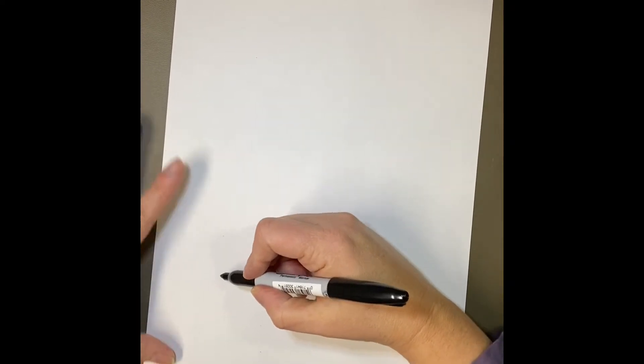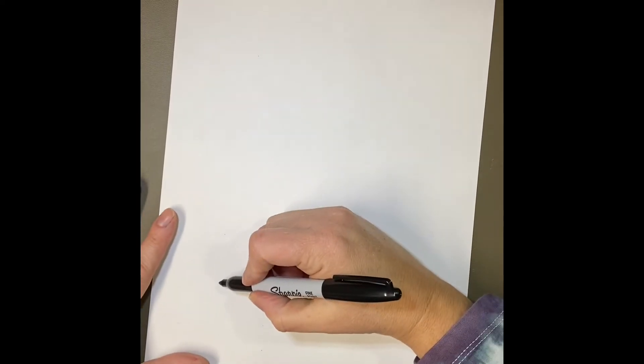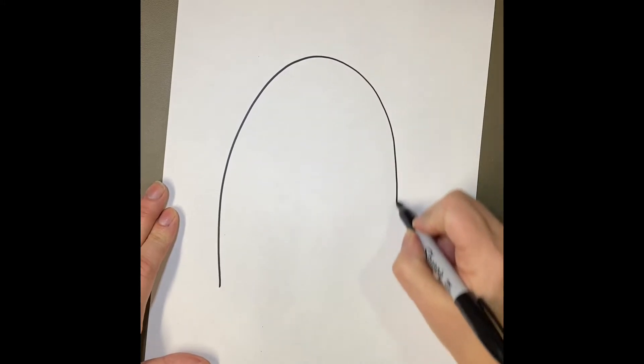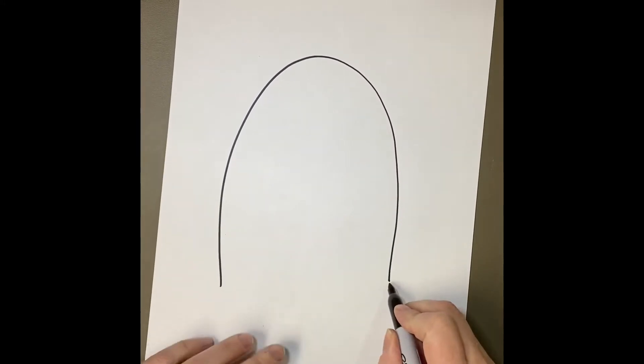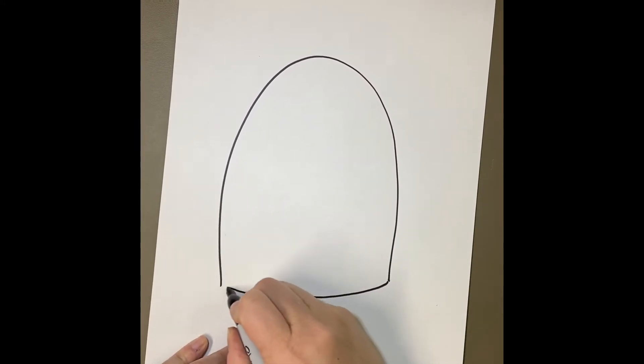I'm going to start a little bit above the bottom of my paper. I'm going to curve up and down, and then I'm going to connect it. This is going to be the bottom of my penguin. So there's my penguin's body.